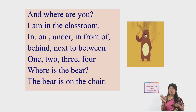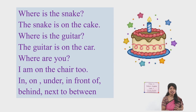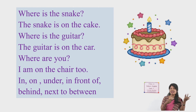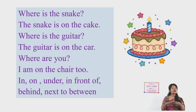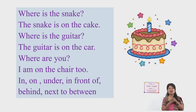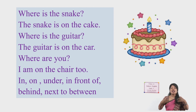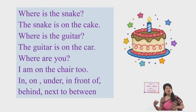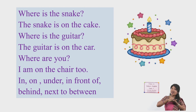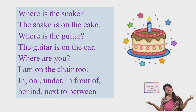One, two, three, four. Where is the bear? The bear is on the chair. Where is the snake? The snake is on the cake. Where is the guitar? The guitar is on the car. And where are you? I am on the chair too. In, on, under, in front of, behind, next to, between. In, on, under, in front of, behind, next to, between.